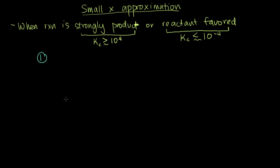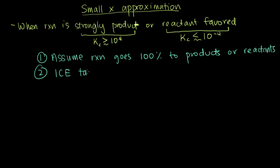How does small x approximation work? The first step is you assume your reaction goes fully to the side you know it's going to go, based on k. So assume reaction goes 100% to either products or reactants, depending on whether k is really small or large. Our second step is to use this information to make your ice table.